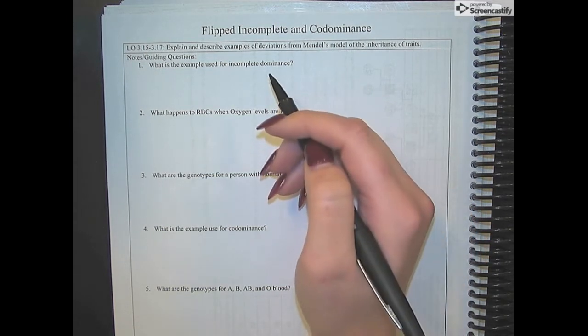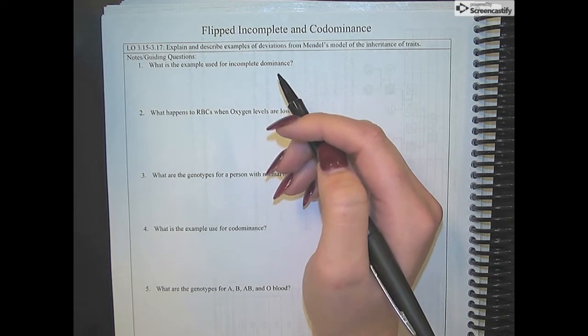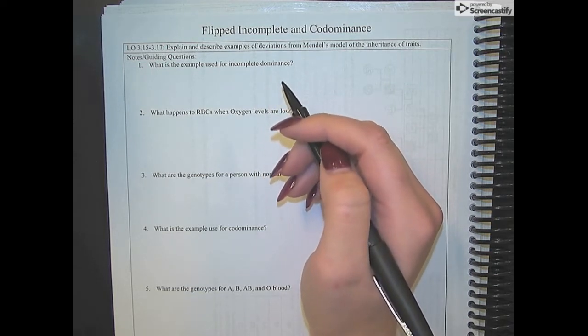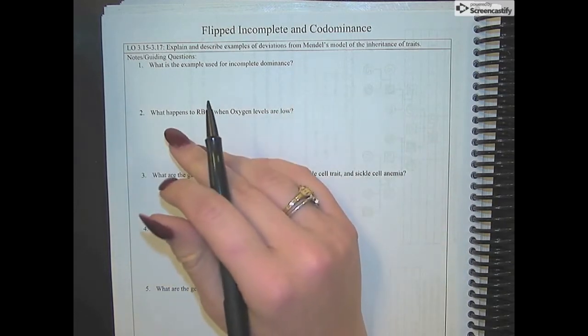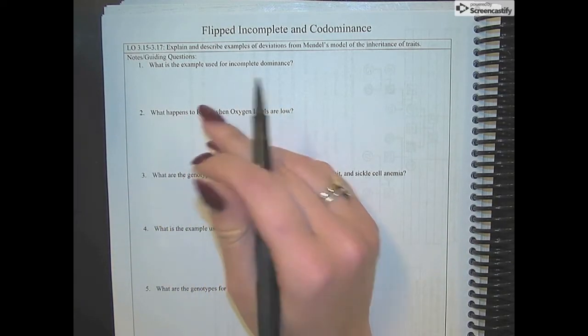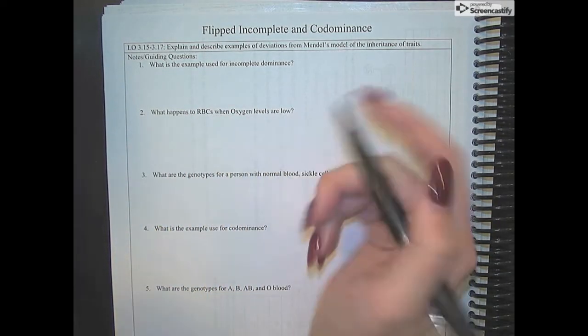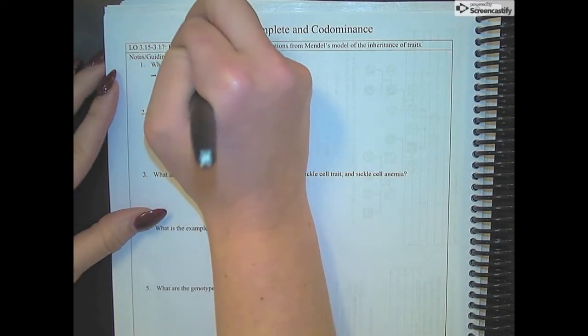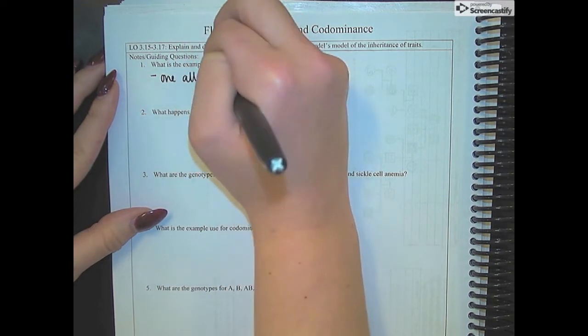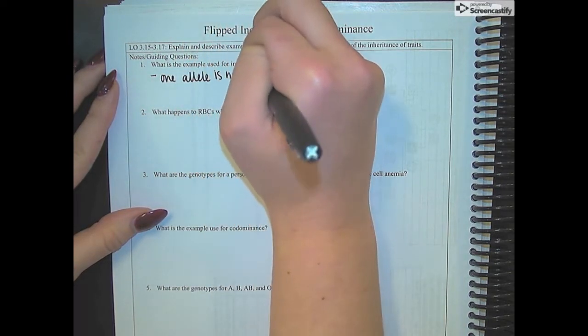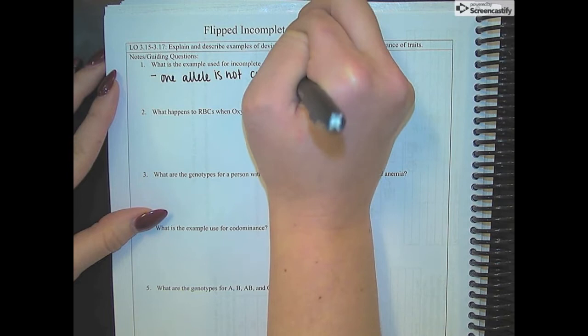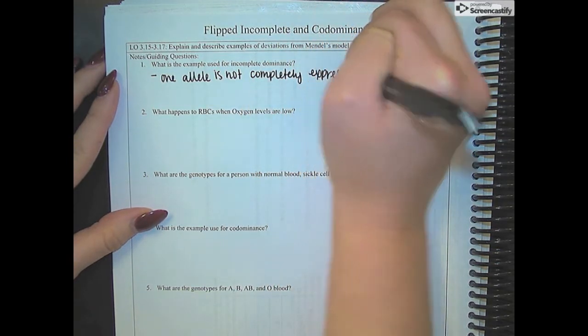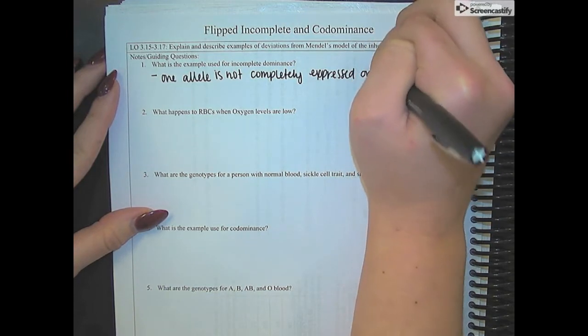So the first one I'm going to talk about is incomplete dominance. Incomplete dominance is a type of inheritance pattern where one allele is not completely expressed over the other.